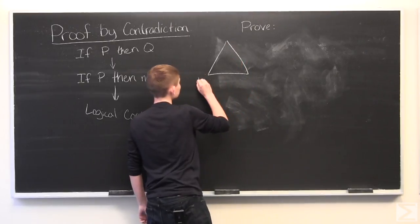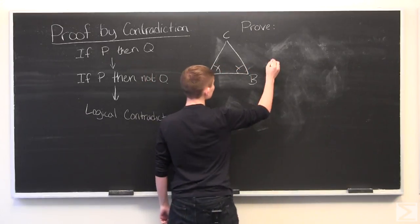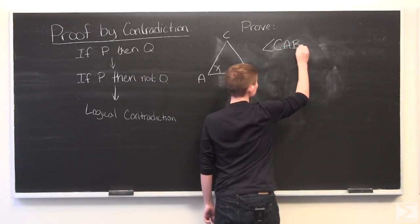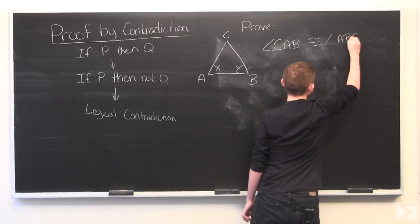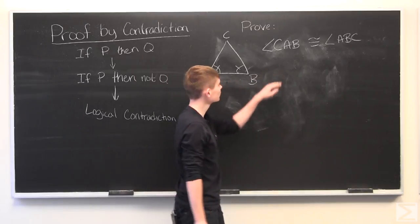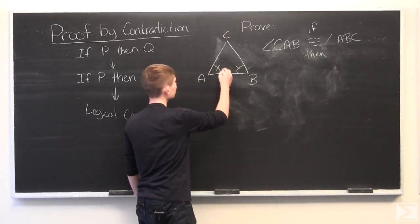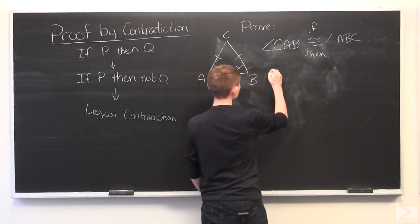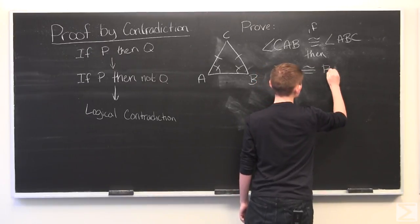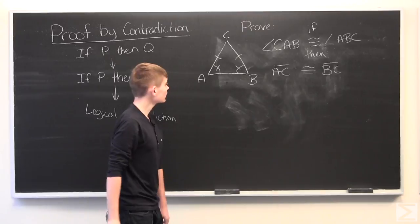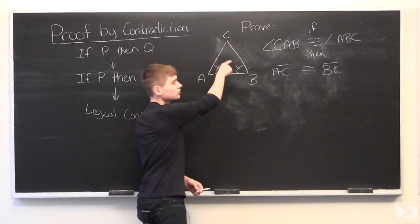Let's say we have a triangle ABC, where angle CAB is congruent to angle ABC. If we have this, we're saying these two sides would be congruent. So, line AC will be congruent to line BC. With proof by contradiction, we're going to assume that this is not true, and that these are different lengths.